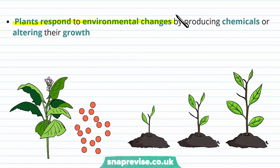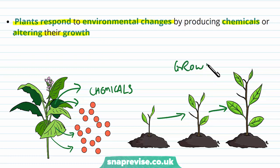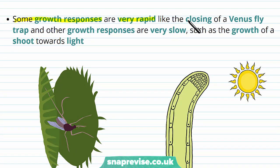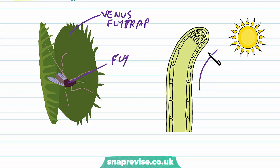Plants also respond to environmental changes by producing chemicals or by altering their growth. Plants can produce a variety of chemicals from their different tissues as a response to stimuli, and they can also change the direction of growth, the amount of growth, and which parts of the plant grow. Some growth responses are very rapid — for example the closing of a Venus flytrap — while others are very slow, such as the growth of shoots towards light. Plants tend to grow towards light because this maximises photosynthesis and therefore maximises their chance of survival.